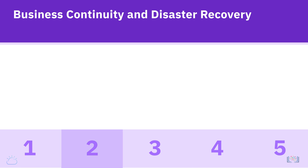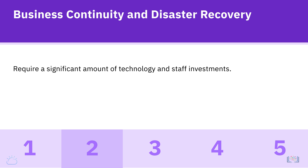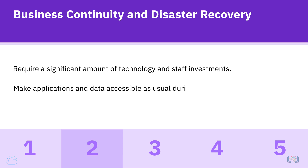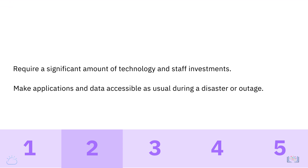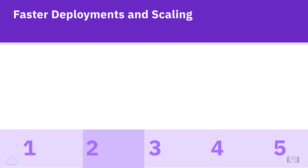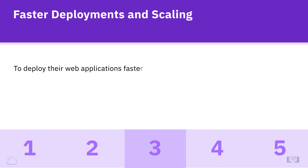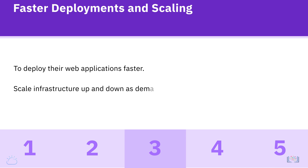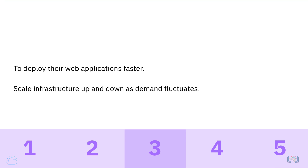Business continuity and disaster recovery require a significant amount of technology and staff investments. IaaS is helping organizations reduce this cost and make applications and data accessible as usual during a disaster or outage. Organizations are also using cloud infrastructure to deploy their web applications faster and scale infrastructure up and down as demand fluctuates.